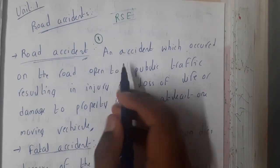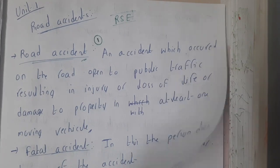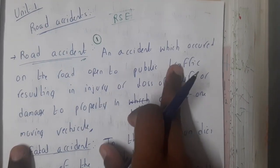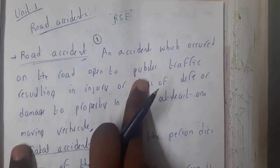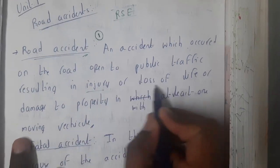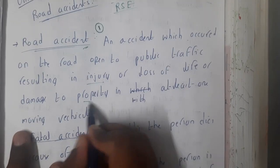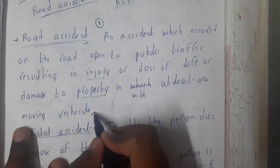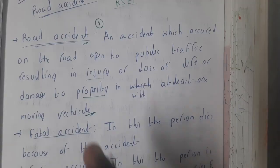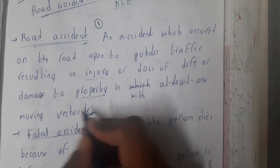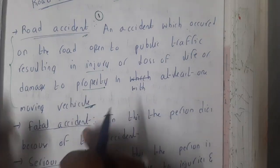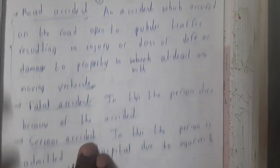First, let us go through the first topic, that is road accident. An accident which occurs on a road open to public traffic, resulting in injuries, loss of life, or damage to any property, in which at least one of them is a vehicle — that situation is called a road accident. In road accidents we have some terminology.